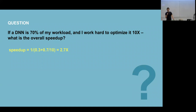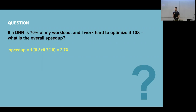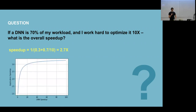The answer is 2.7x. So I'm a deep learning engineer working on efficiency at the compiler level, the DNN level, optimizing hardware — I get 10x improvement and tell my manager, but actually the real improvement is only 2.7x. This is called Amdahl's Law. It's really important and one of the simplest laws out there.